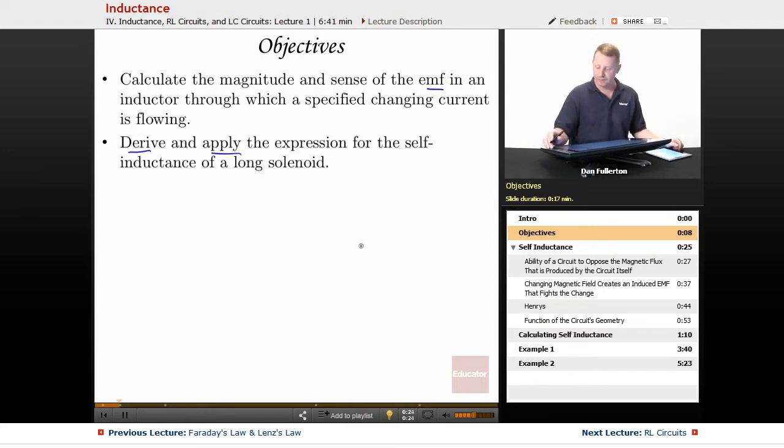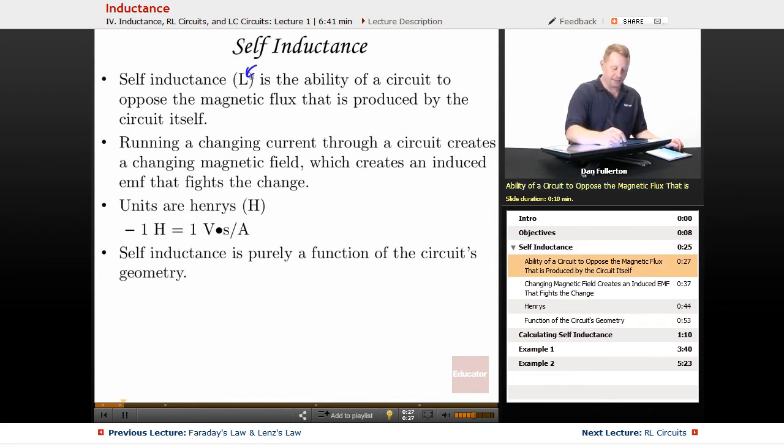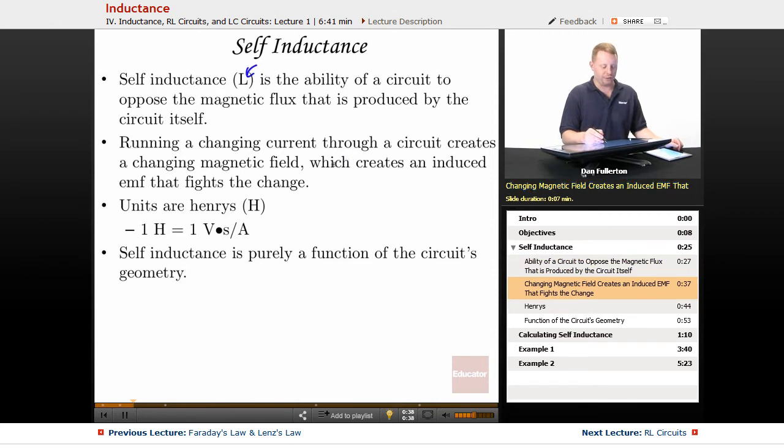So let's start by talking about what self-inductance is. Self-inductance, which gets the symbol capital L, is the ability of a circuit to oppose the magnetic flux that is produced by the circuit itself. Running a changing current through a circuit creates a changing magnetic field which creates an induced EMF that fights that change.